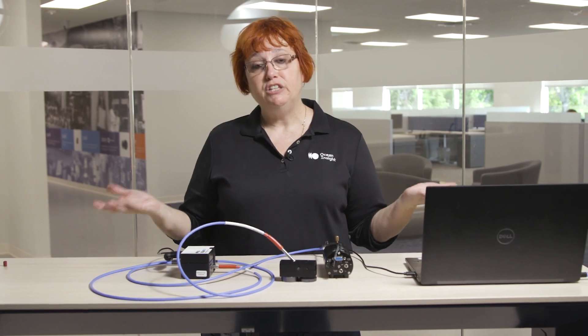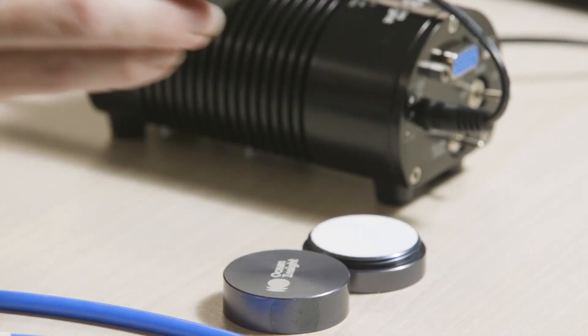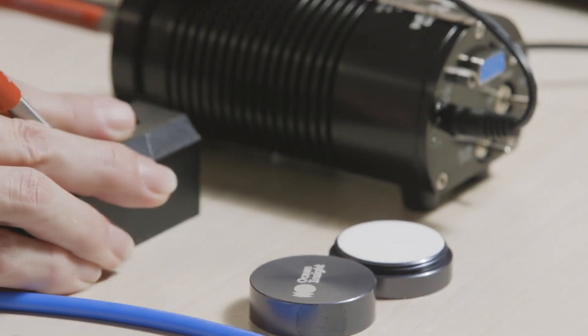We're going to open our shutter again so we're illuminating our reflectance standard. And for a standard reflectance measurement, we're ready to go. You've done everything you need to do. Now you're just going to place the probe onto your sample and collect your reflectance spectrum.